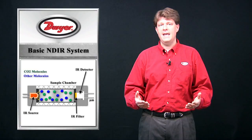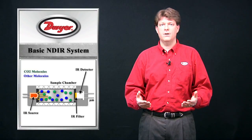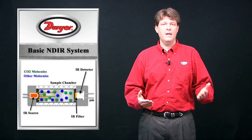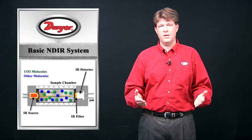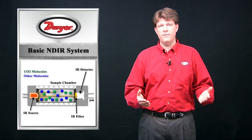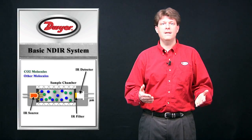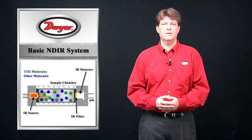A basic NDIR sensor consists of an infrared light source, a sample chamber, an infrared filter, and an infrared detector.